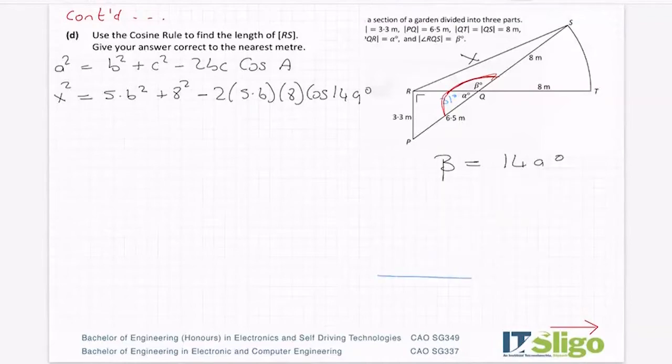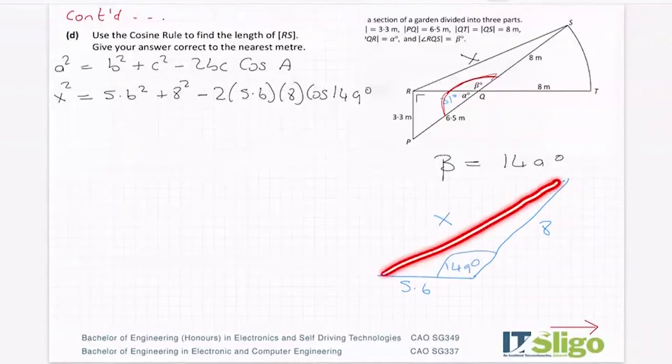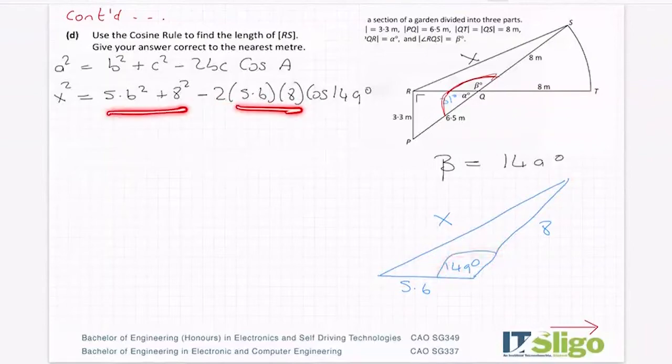Okay. So he's 5.6. He's 8. He's x. And he's 149 degrees. Okay. So what I'm saying is the cosine rule says that this side is equal to this side squared plus this side squared minus 2bc cos of the angle between them. So they are the values that I filled in there.